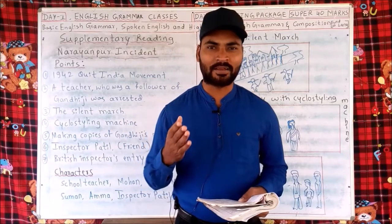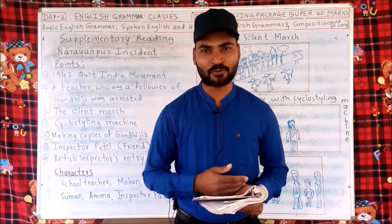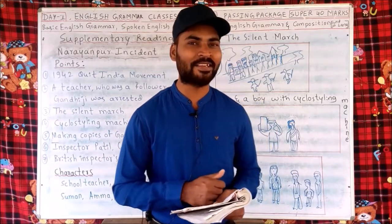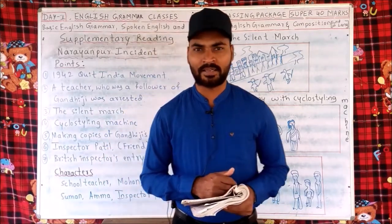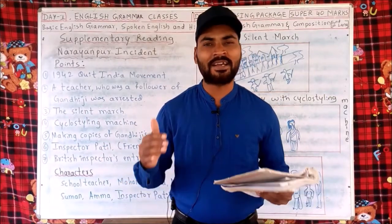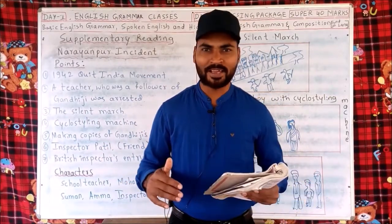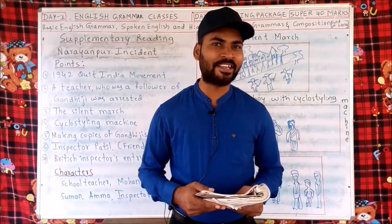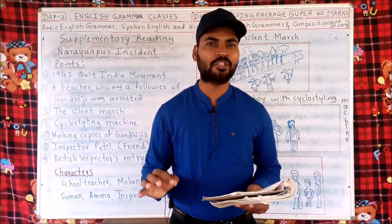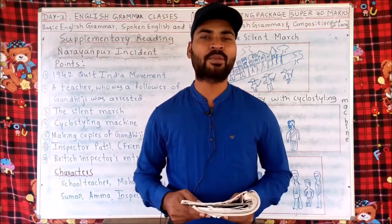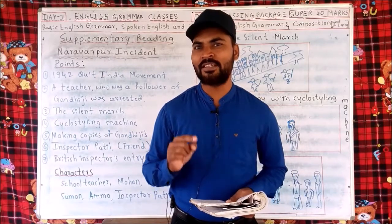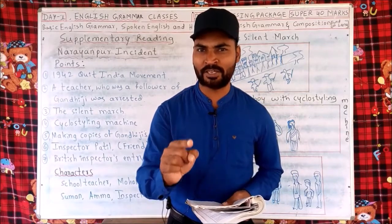In order to fight against the teacher's arrest and to serve a notice to the British to quit India, his elder son Mohan and his friends arranged a different kind of agitation. This school teacher had three children: Mohan, 18 years old; Babu, 13 years old; and Manju, 11 years old. The family members and Mohan's college friends found a different way of fighting against the British.